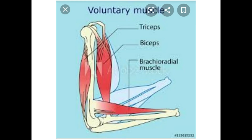Let's know about voluntary muscles. These muscles are under our control and work according to our will. They are directly attached to our bones. They are present in our arms and legs. We use these muscles to walk, lift objects and play games, etc. Voluntary muscles are also known as skeletal muscles.